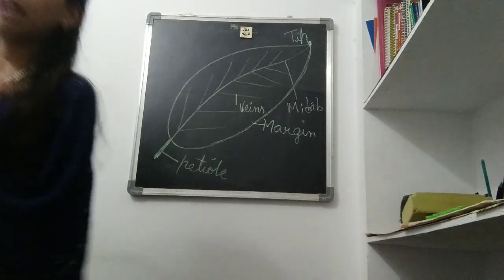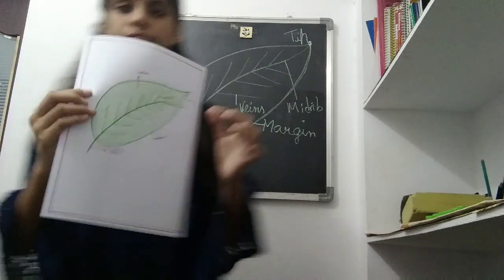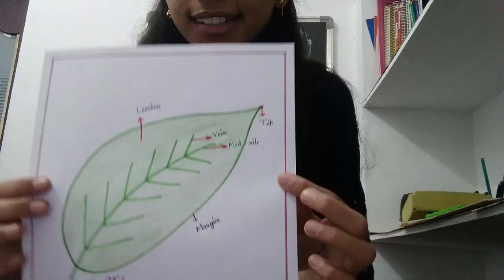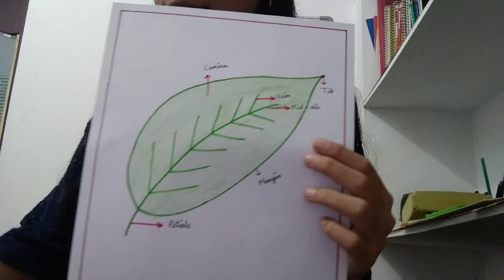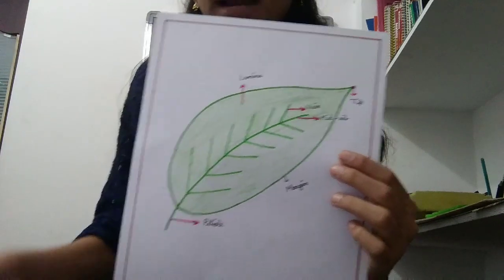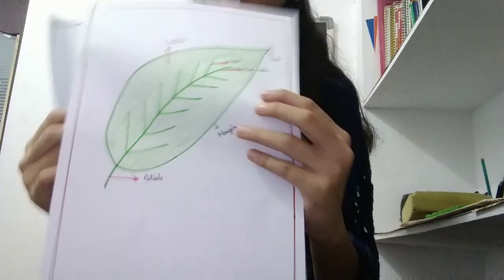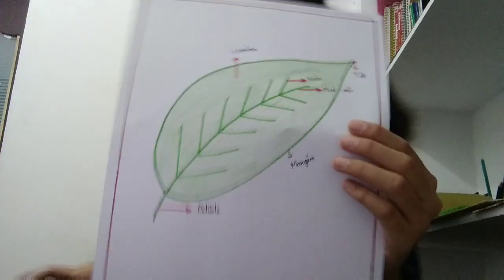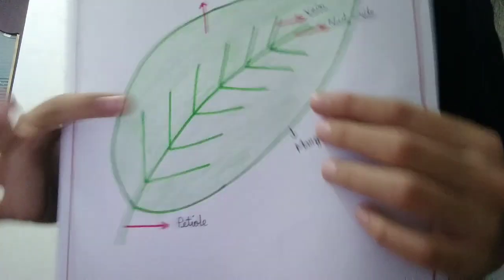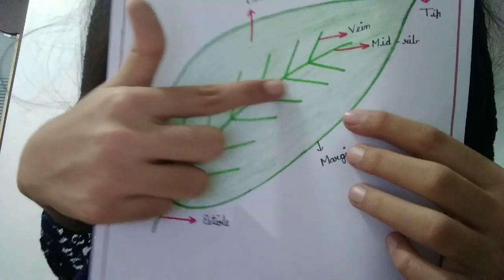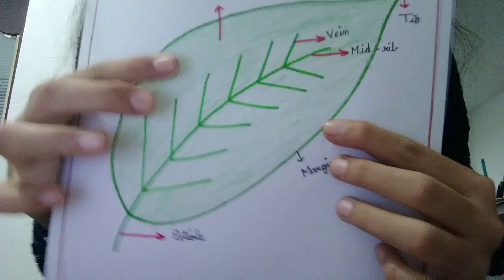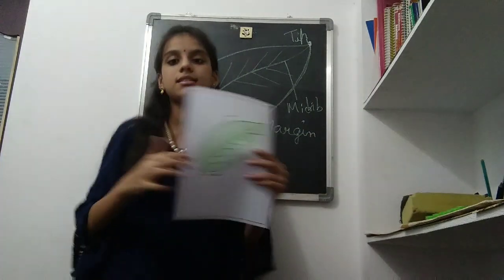The leaf will be green in color. I will show you the drawing also. See here — this is the drawing of the leaf, and this is the drawing of the plant, with the leaves. Petiole, outline margin, tip — this point is tip. This is the vein, and this middle line which joins top to bottom is called mid-rib. And the green chlorophyll part is called lamina. This green part is called lamina.